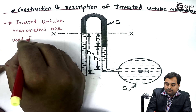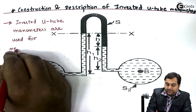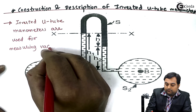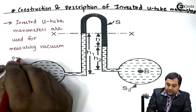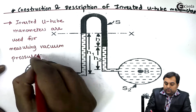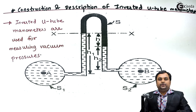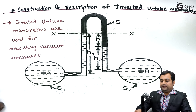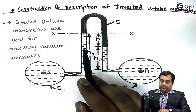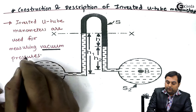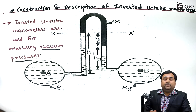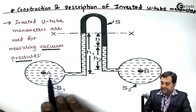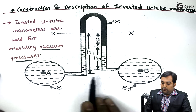for measuring vacuum pressures. This is a very important point. Previously we have seen that differential manometers were used to measure pressure above atmosphere. Inverted U-tube manometers are used for vacuum pressure measurement, that is, the pressure would be below atmospheric.